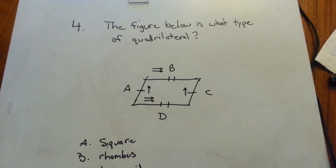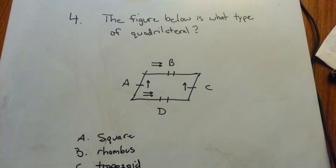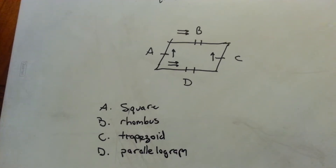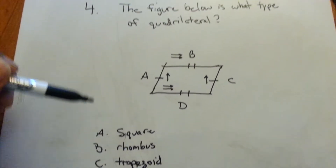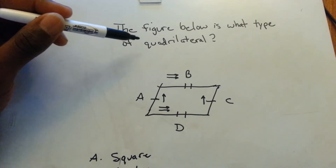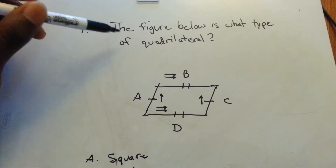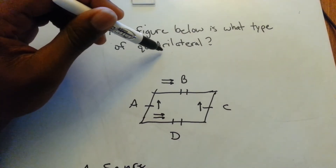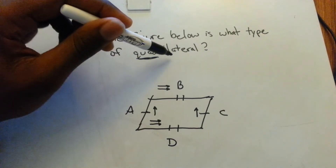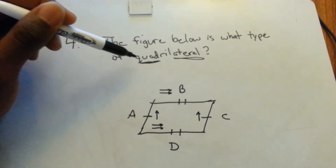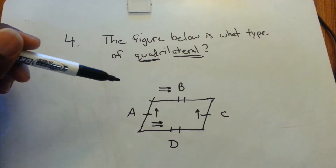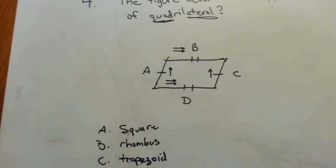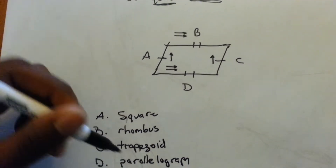The next question asks: the figure below is what type of quadrilateral? The options are square, rhombus, trapezoid, and parallelogram. Quadrilateral just means four-sided — 'quad' is four, 'lateral' is side. So everything that has four sides is a quadrilateral, but it breaks down into specific types like square, rhombus, trapezoid, and parallelogram.